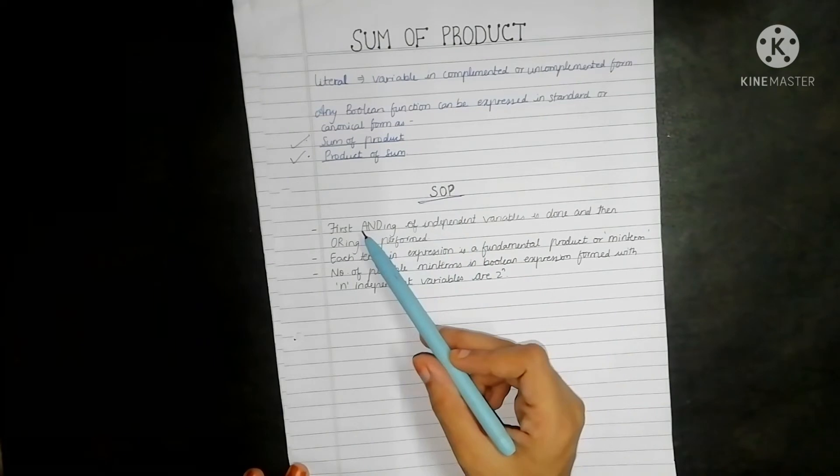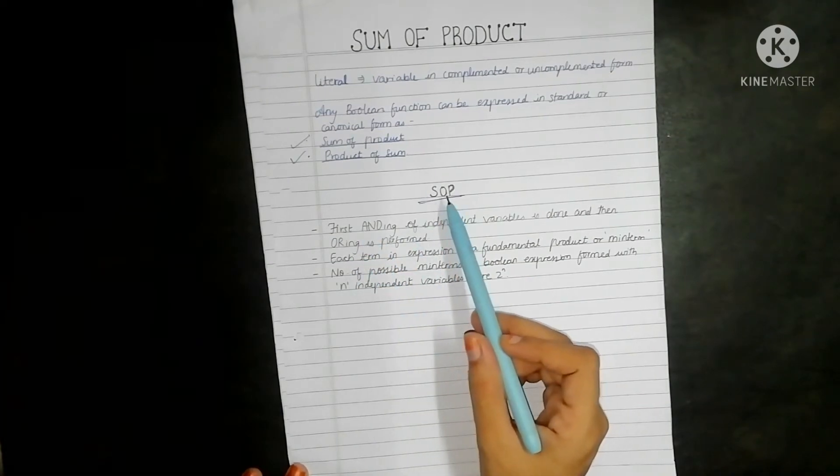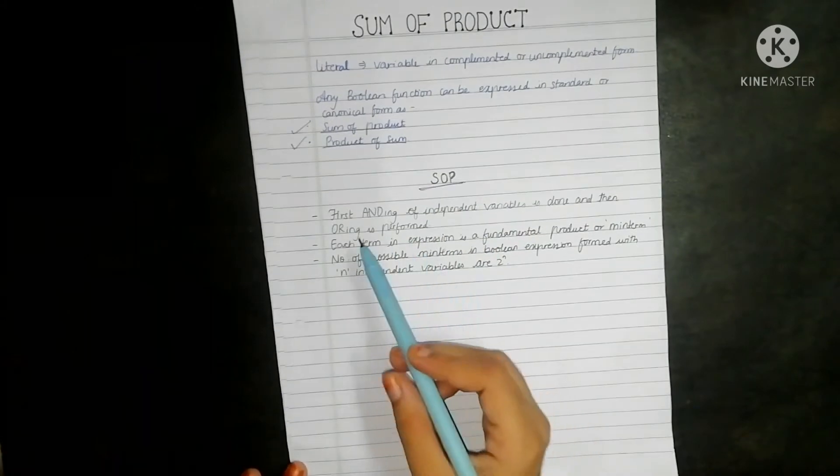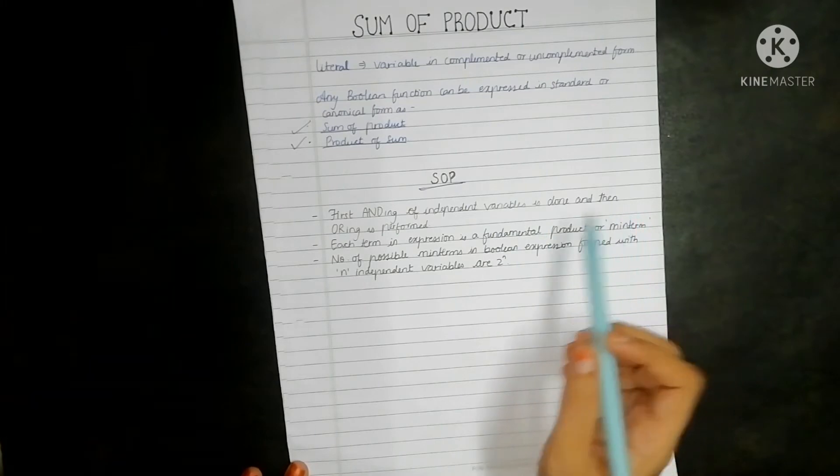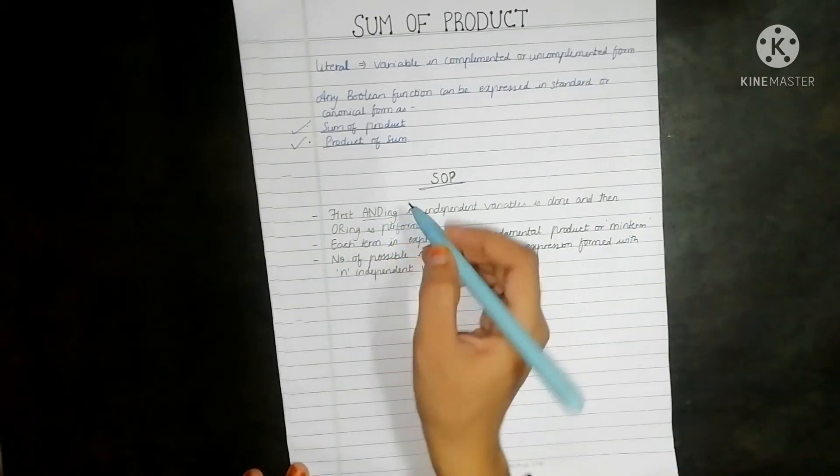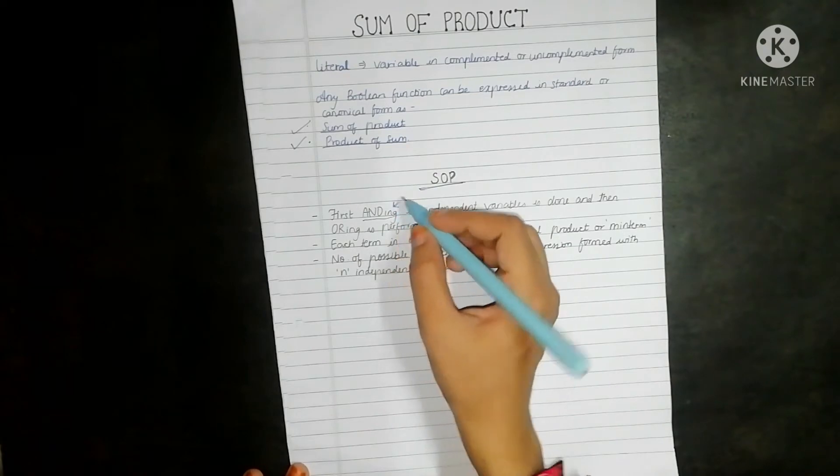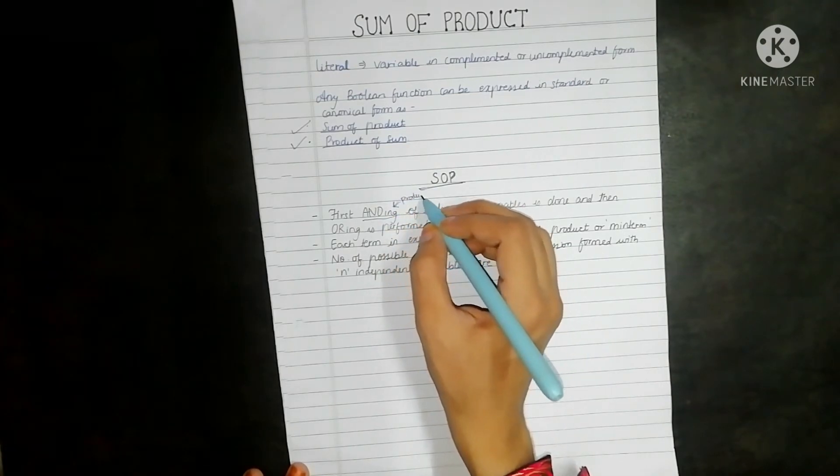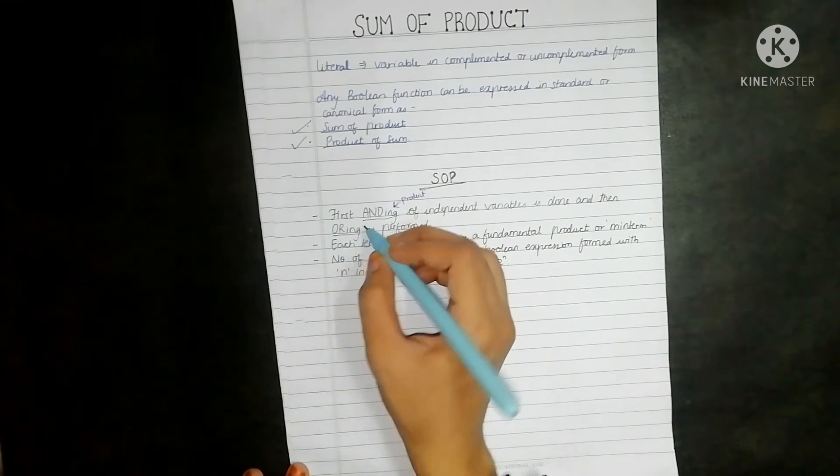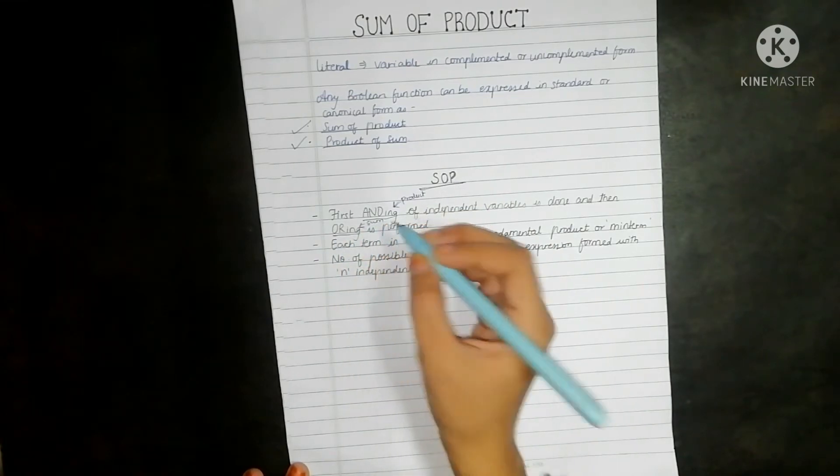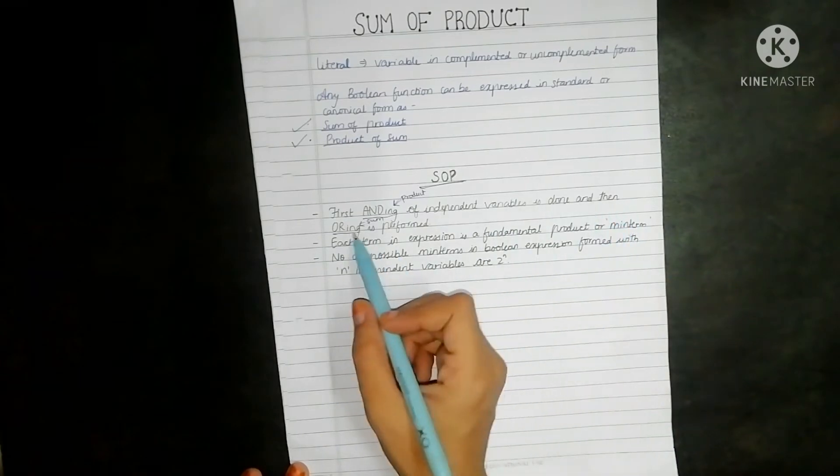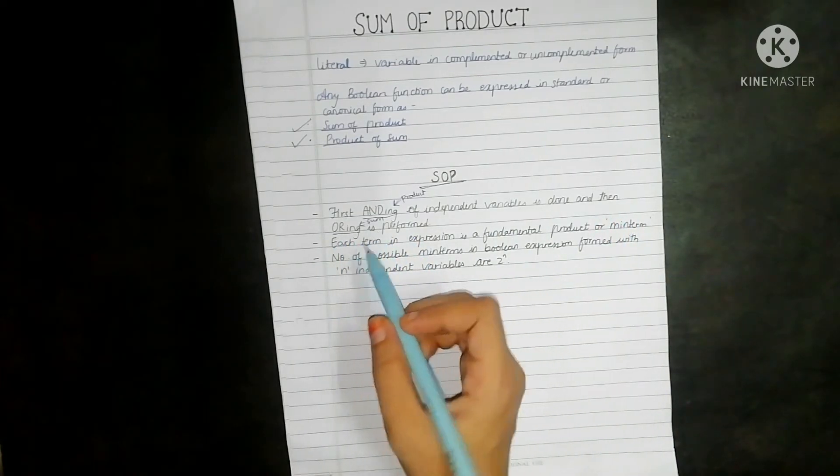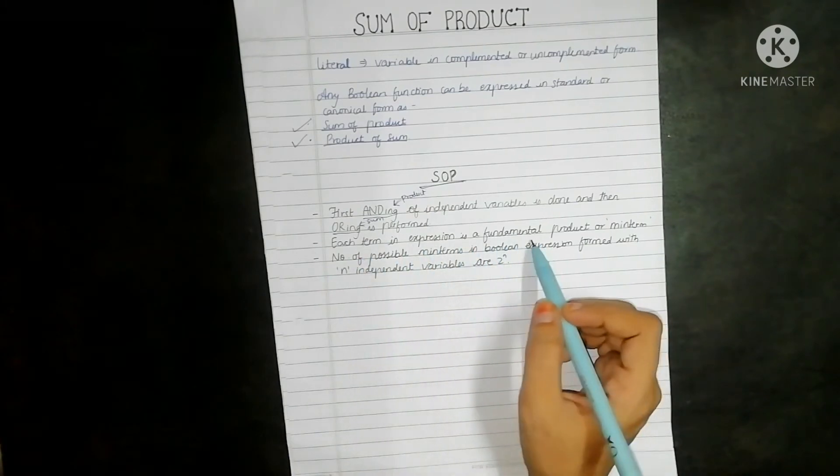Now let's see a few basic important points related to sum of product before we see the actual example. First of all, ending operation on independent variables is done and then oring operation is performed. By ending, as we know from the basics of Boolean algebra, ending is for product and oring operation means sum is to be taken. So first ending of the independent variables is done, that is product of independent variables is taken and then oring is performed. Each term in the expression is known as the fundamental product or min term.